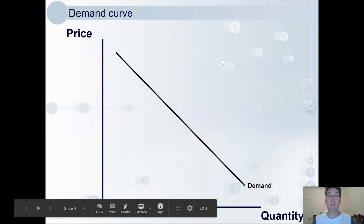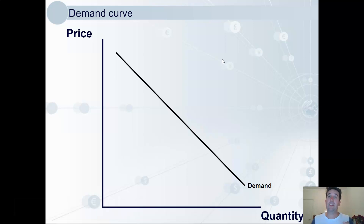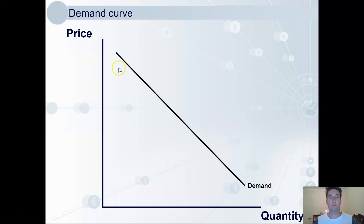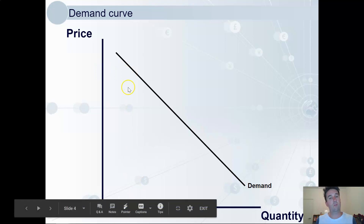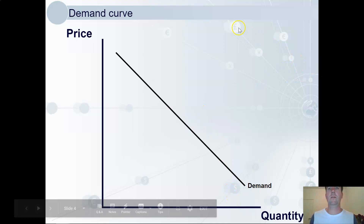This relationship is reflected in the demand curve that we see here. The curve shows how many units consumers are willing to buy at each price. So when the price is high, not many; as the price lowers, much more — a lot of demand.